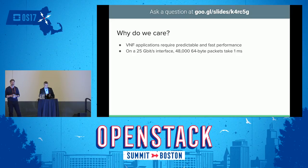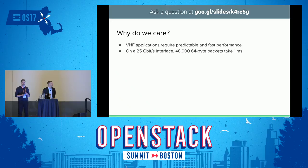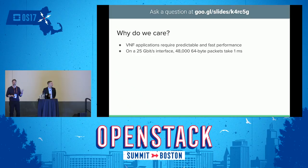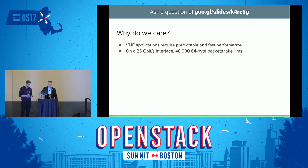So the question is: why do we care about the real-time performance of a hypervisor? If you think about VNF applications, they need to have predictable and fast performance. I did a little calculation: if you have a 25 gigabit interface and 48,064-byte packets, it takes one millisecond to transfer that. So if your CPU is doing something for one millisecond, that's the amount of packets you risk losing.